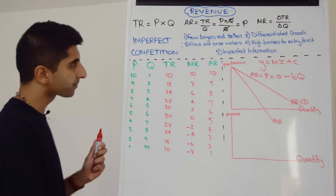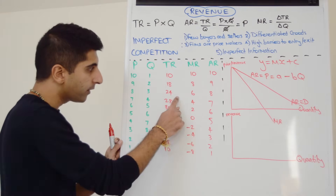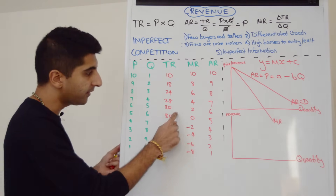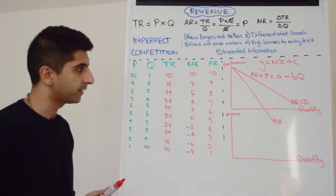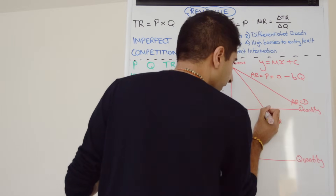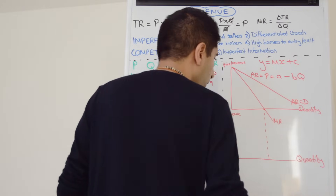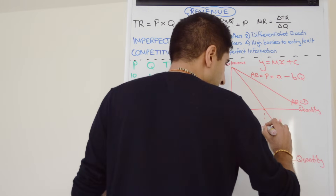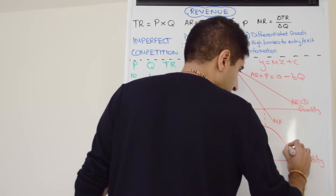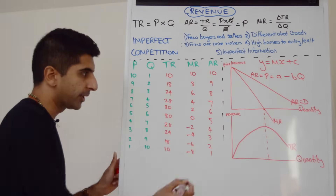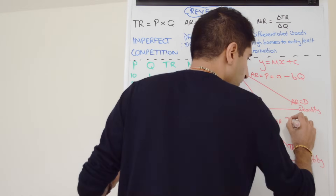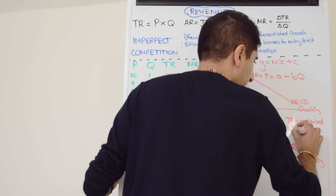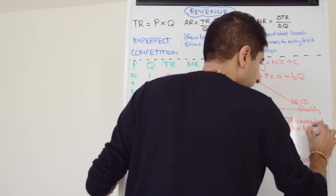What about total revenue now? Well, you can see total revenue is rising, rising, rising, but at a slower rate each time, because marginal revenue is falling. It hits its peak, and then it starts to decrease. Total revenue will hit its peak where marginal revenue is zero. So it's going to be rising at a slower rate, hit its peak when marginal revenue is zero, and then fall. We can write on the side that total revenue is maximized when marginal revenue is equal to zero.